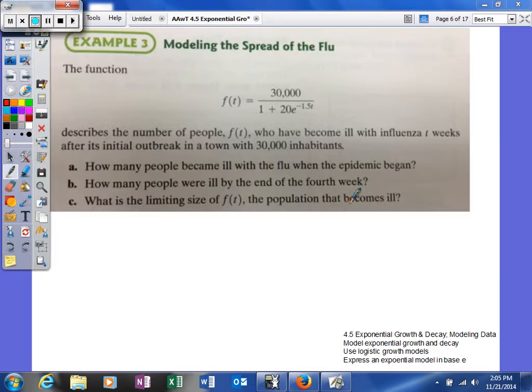Our next example in this section, Example 3, we're going to be modeling the spread of flu. The function f(t) equals 30,000 over 1 plus 20e to the negative 1.5t power.